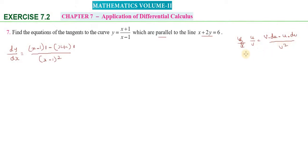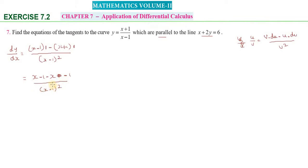Applying the formula: (x minus 1) into 1 minus (x plus 1) into 1, divided by (x minus 1) whole square. Simplifying the numerator: x minus 1 minus x minus 1 equals minus 2. So dy/dx equals minus 2 divided by (x minus 1) whole square.